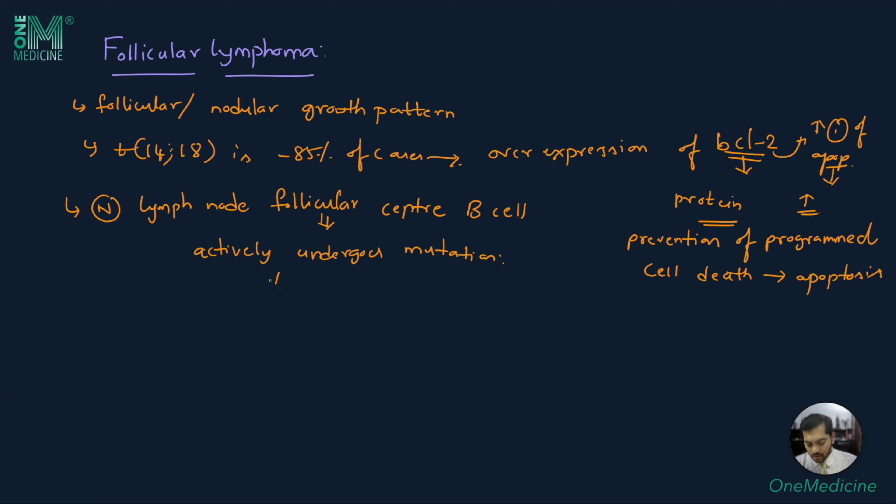The normal lymph node follicular center B cell usually actively undergoes mutation. This mutation is to develop immunoglobulin variable regions, that is to create antibodies with higher affinity to selecting antigens. The follicular lymphoma cells also undergo a lot of mutation. This leads to accumulation of genetic damage.